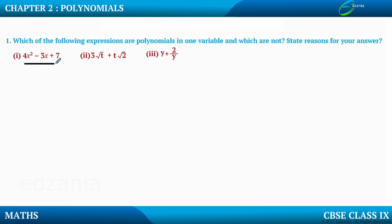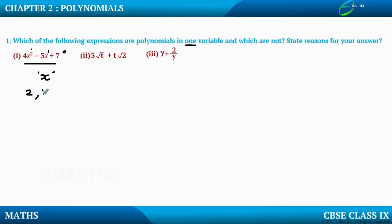The first question is 4x squared minus 3x plus 7. We need to identify whether this is a polynomial in one variable. One variable means only one alphabet should be used — and yes, only x is used. According to the definition of a polynomial, the expression is a polynomial only if the power of the variable is a whole number. The power of x here is 2, then 1, and then 0. Since 2, 1, and 0 are all whole numbers, this is a polynomial in one variable.